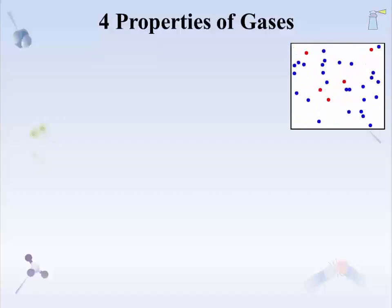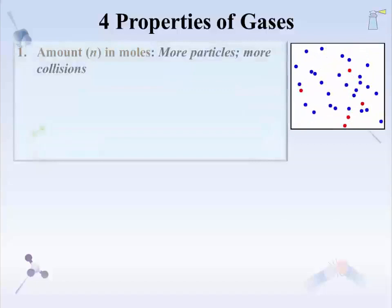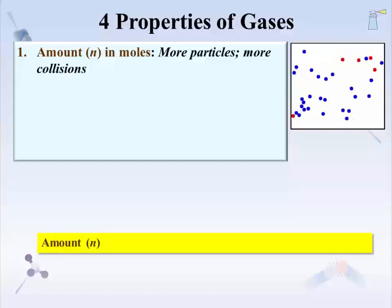As for perspective, there are four basic properties used to describe gases. One way to consider the properties is through their effect on the number of collisions that the particles make — specifically, how altering these properties creates more collisions. The first property is amount, the number of particles, usually given in or turned into moles. With amount, more particles mean more collisions.